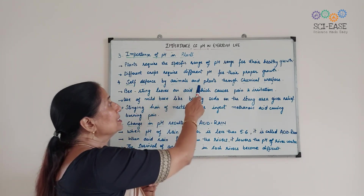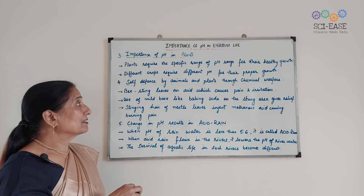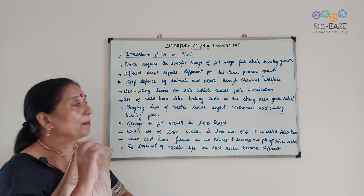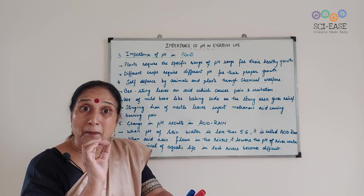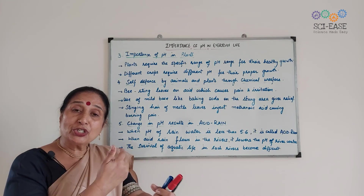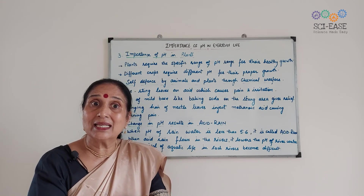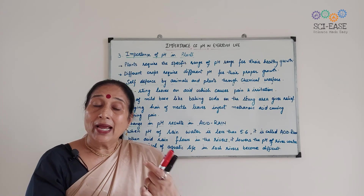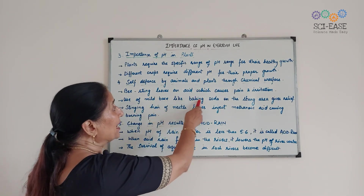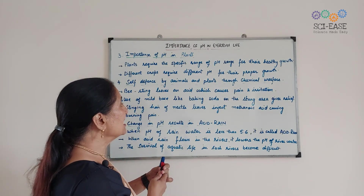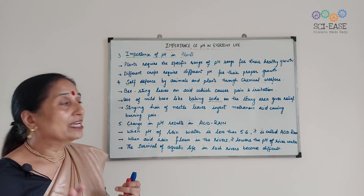The fourth point is self-defense by animals and plants through chemical warfare. Sometimes a bee stings your arm. Bee sting leaves an acid which causes pain and irritation, because the bee injects some acid into your skin. In order to neutralize that effect of the acid, we should use a mild base like baking soda. Apply baking soda on the stung area and that will give relief.